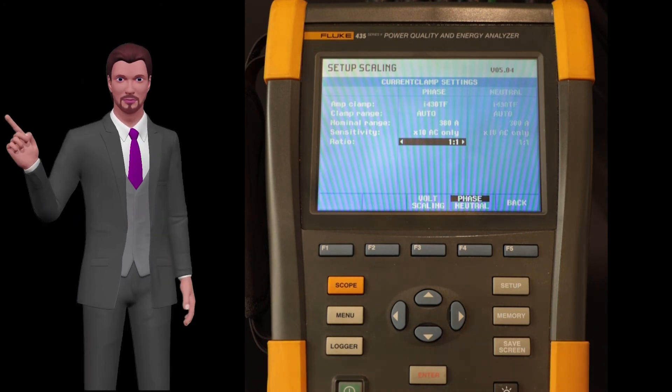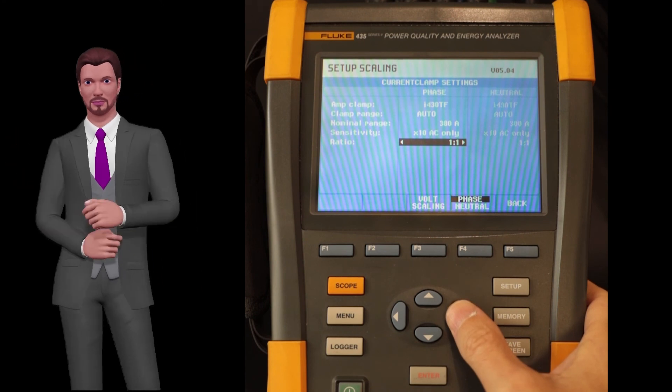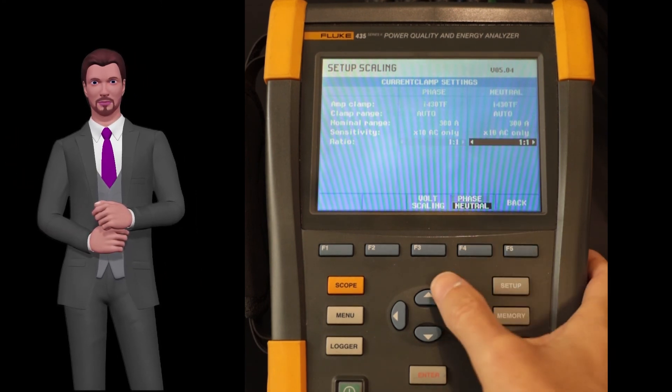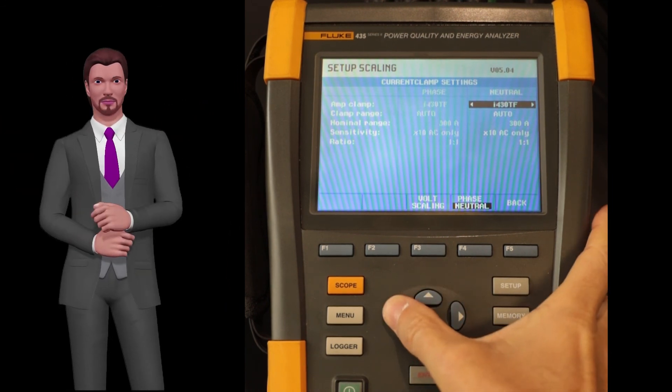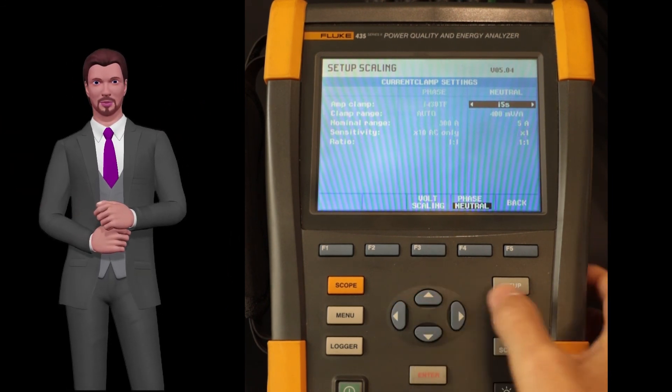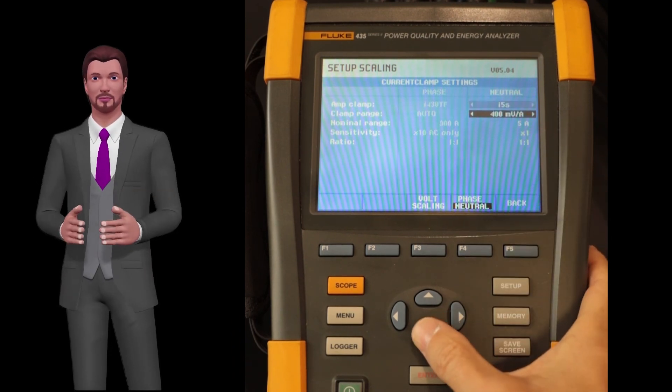In this way, we have already configured the current probes for the three phases. All this process is equally applicable, but separately, to the configuration of the neutral current probe. By pressing the F4 key, we change to the right column and we can make the settings for the neutral current probe.